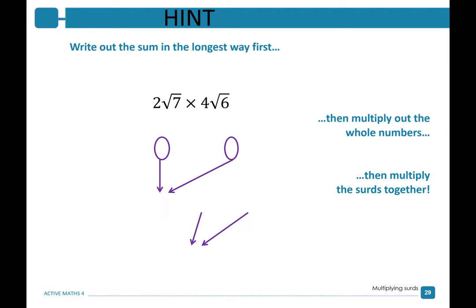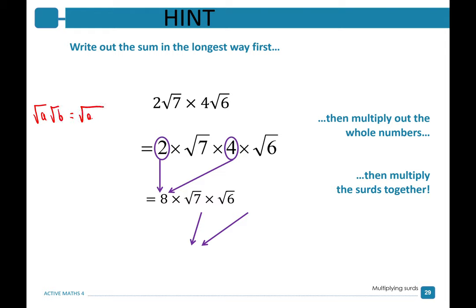Let's look at how we can multiply SURDs. 2 root 7 times 4 root 6. Let's write out the sum the long way first: this is the same as saying 2 times root 7 times 4 times root 6. Multiply together your like terms: 2 times 4 gives you 8, times root 7 times root 6. We know from our SURD rules that root A times root B is the same as root A times B. This gives us 8 times the square root of 42. Our final answer is 8 root 42.